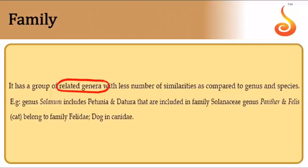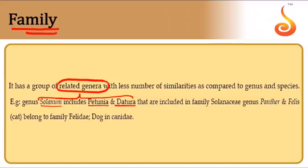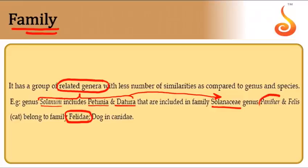A family is a group of related genera. For example, genera Solanum, Petunia, and Datura share similarities and are placed in family Solanaceae. Similarly, family Felidae includes two related genera: Panthera and Felis.